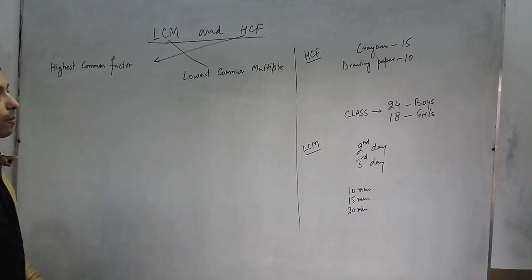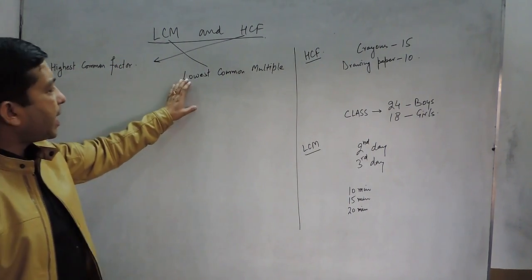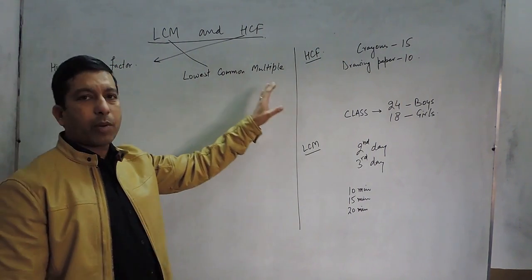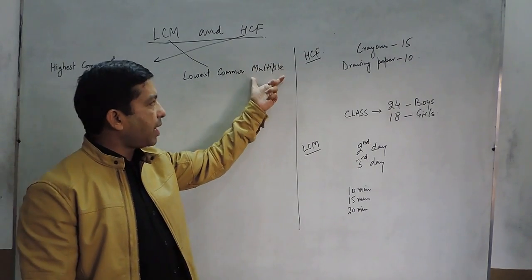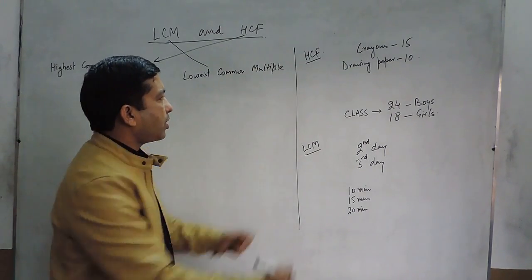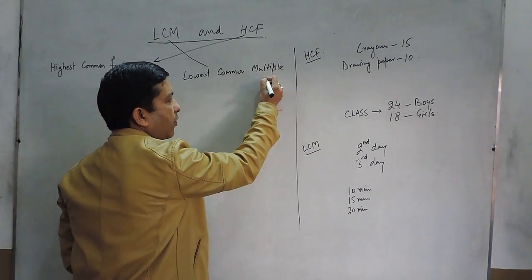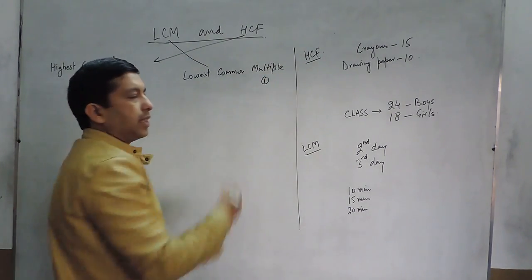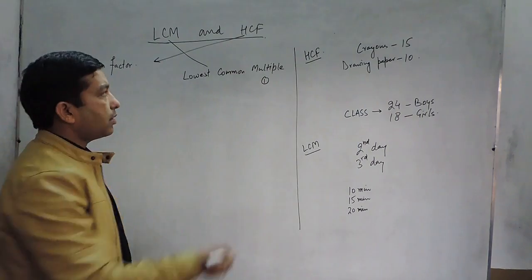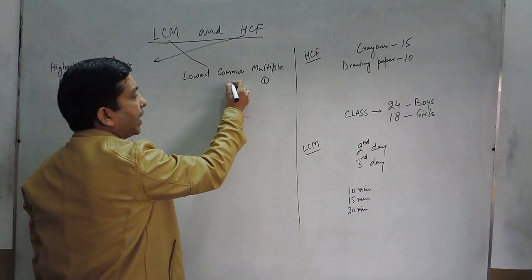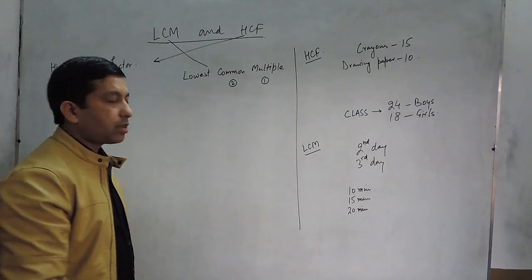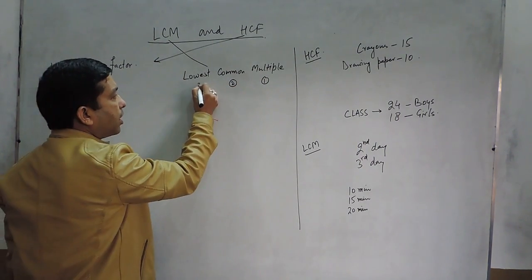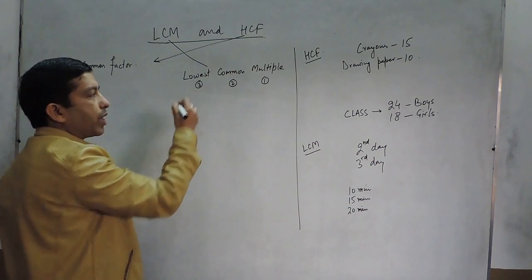When we say the Lowest Common Multiple, there are three key points: first, this is a multiple; second, it is common to all; and third, it is the lowest.